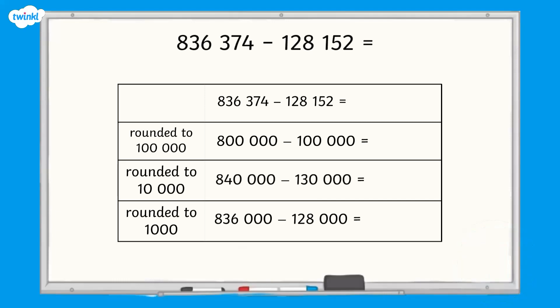Which did you find easier or quicker to calculate mentally? We know that we are expecting the answer to our calculation to be approximately 700,000, 710,000, or 708,000.